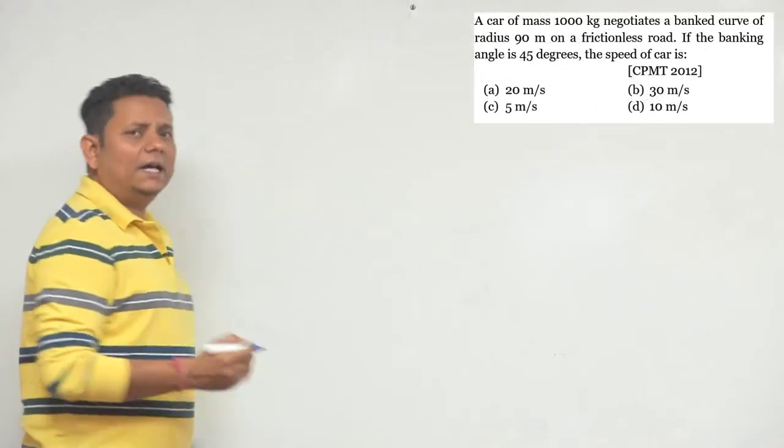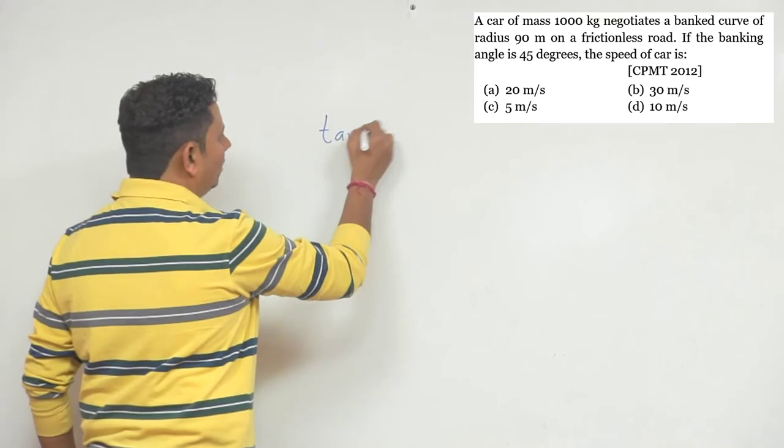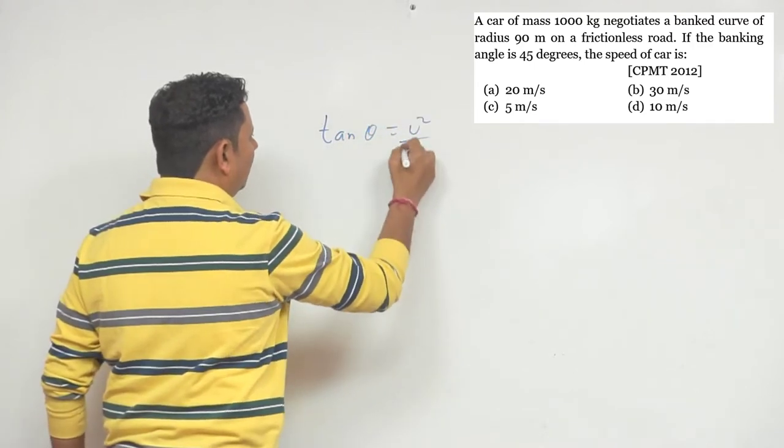Banking of the road ka sawal hai. We can directly use the formula. Banking of the road ka formula hota hai, tan theta is equal to V squared divided by RG.